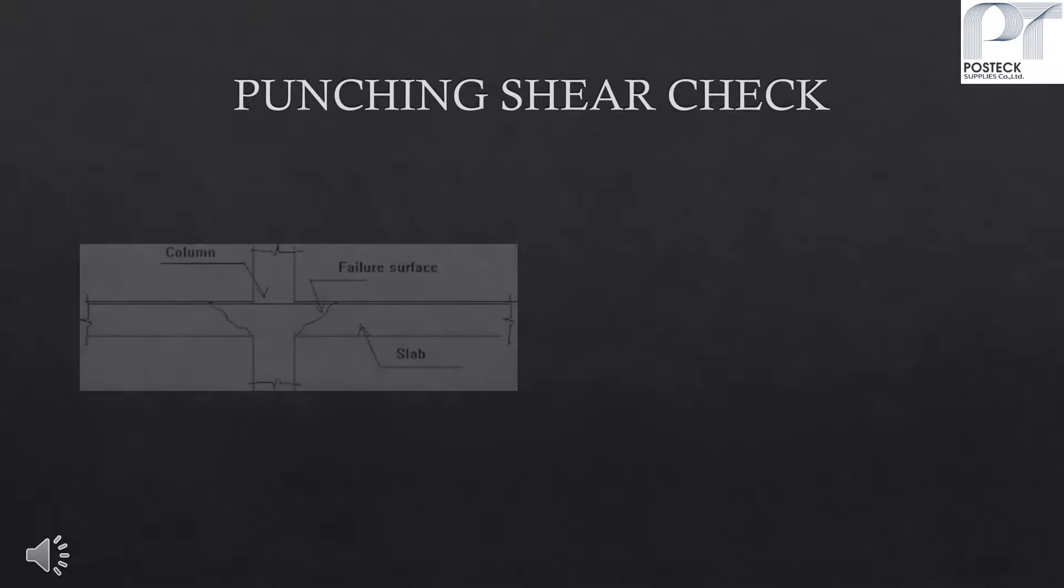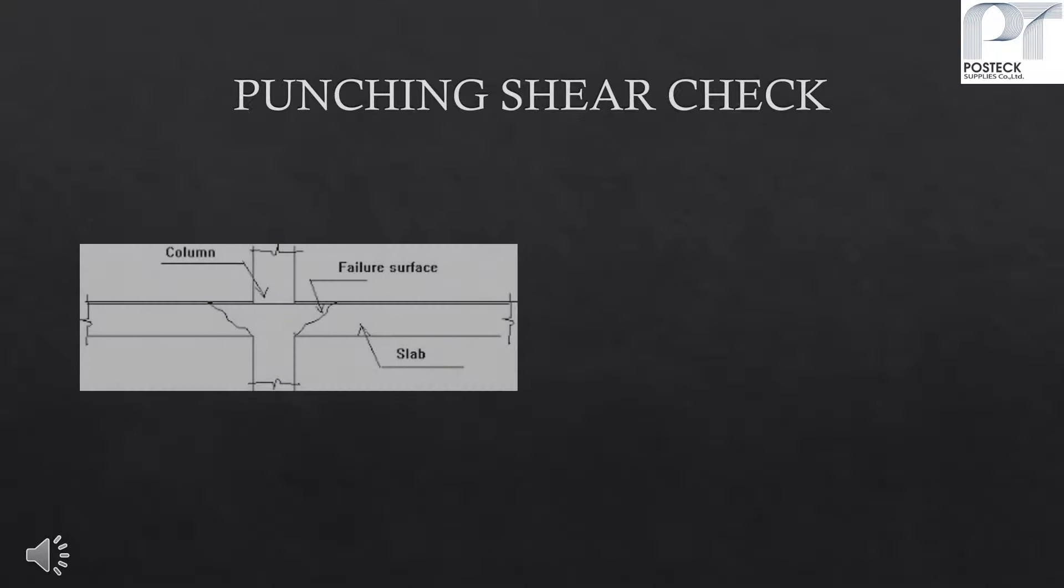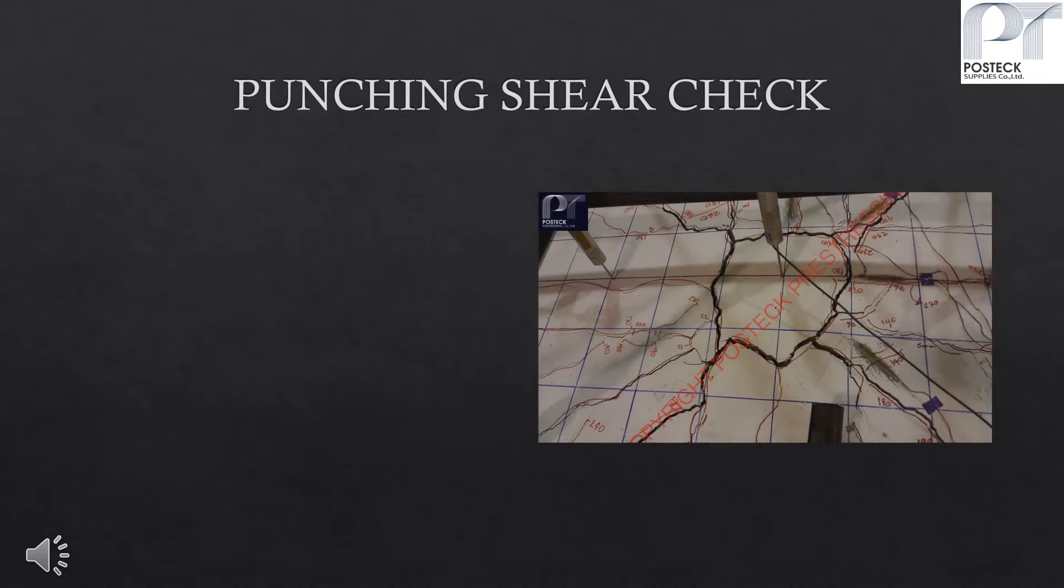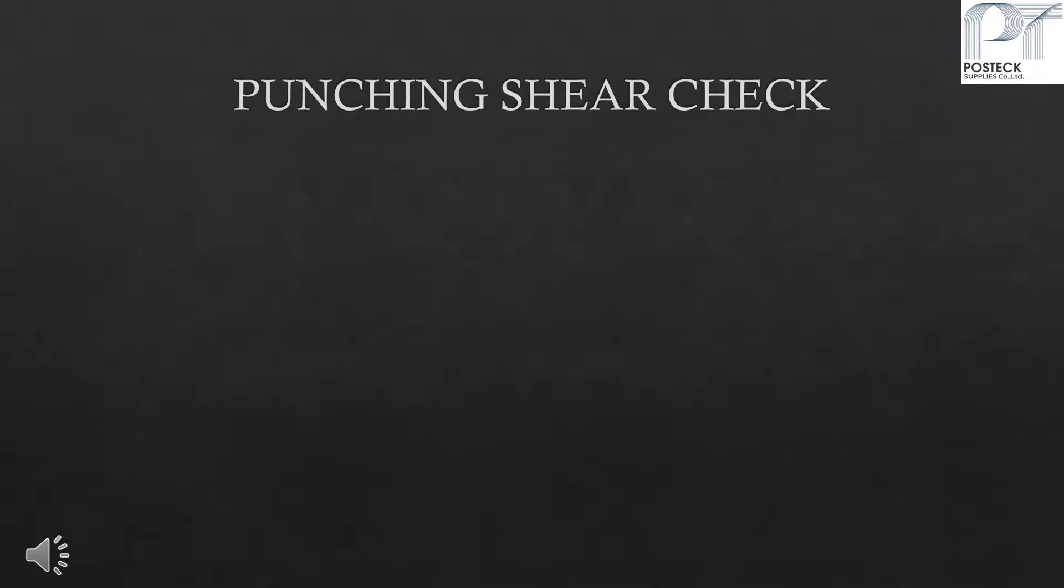By using any design methods, the designer should carefully investigate for punching shear capacity of the slab. Punching shear design is a truly two-way action where vertical shear force as well as transferred moment in two principal directions must be considered in a single run.